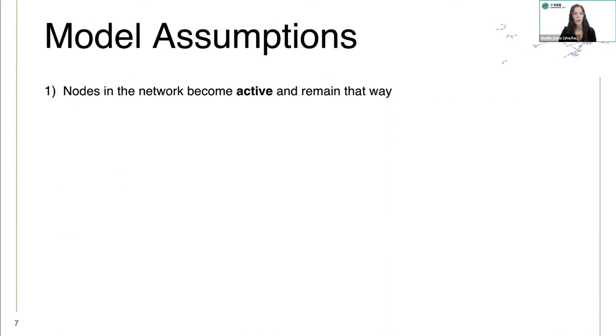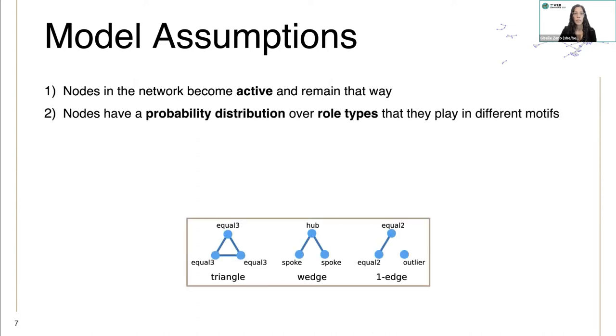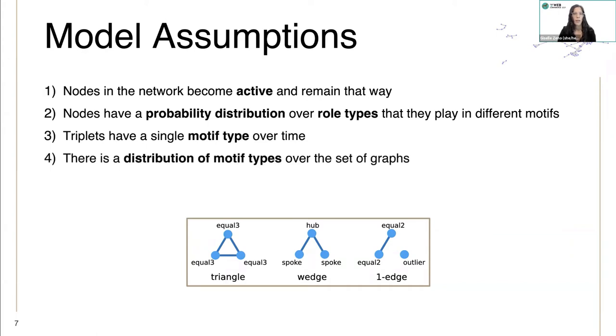Our model assumptions are that nodes in the network become active and remain that way. Nodes have a probability distribution over role types that they play in different motifs. Triplets have a single motif type over time. There is a distribution of motif types over the set of graphs. And motif occurrences over time are distributed exponentially with varying rate.